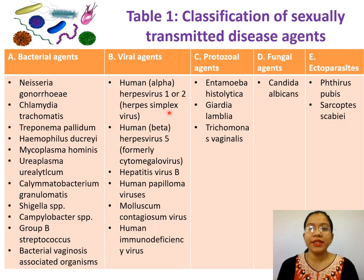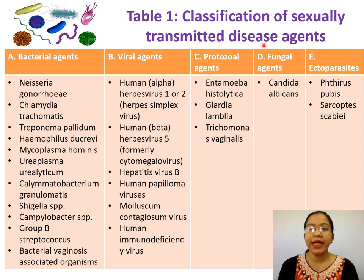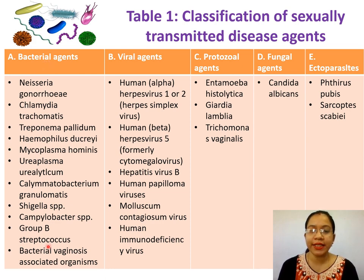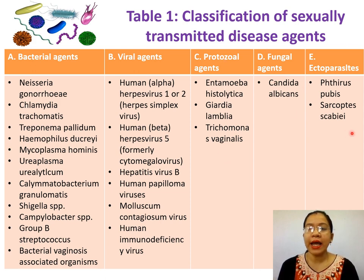In this table, we can see the classification of sexually transmitted disease agents based on their classifications: bacterial agents, viral agents, protozoal agents, fungal agents, and ectoparasites.